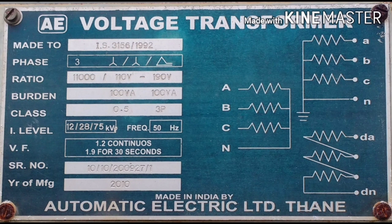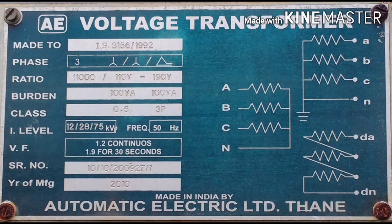If you have any questions, all these things can be defined similarly to CT. VF is the Voltage Factor, which determines the maximum operating voltage. A value of 1.2 is used for continuous operation. For short-duration overvoltage — such as 30 seconds — a higher Voltage Factor value is allowed.